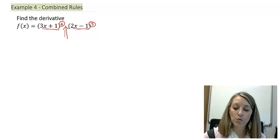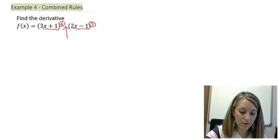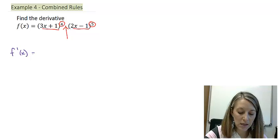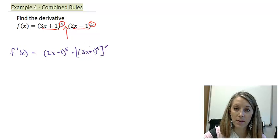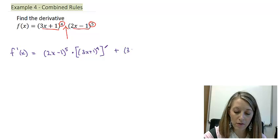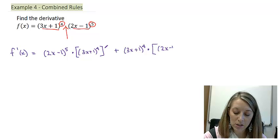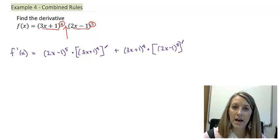Let me write out the product rule, and then we're going to start taking the derivative in the next step, where we'll need to utilize our chain rule. Starting with the product rule, my derivative is the original of the second, (2x − 1) to the fifth, times the derivative of the first — so the derivative of (3x + 1) to the fourth. That's the first half of my product rule, plus the original of the first, (3x + 1) to the fourth, times the derivative of the second, (2x − 1) to the fifth.